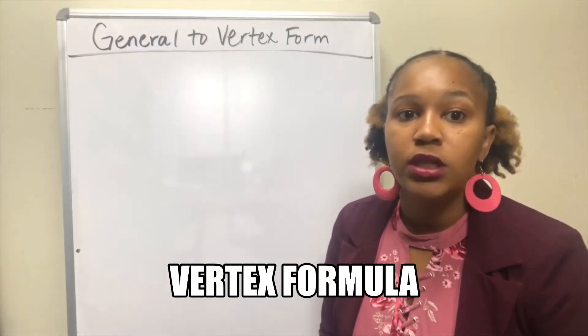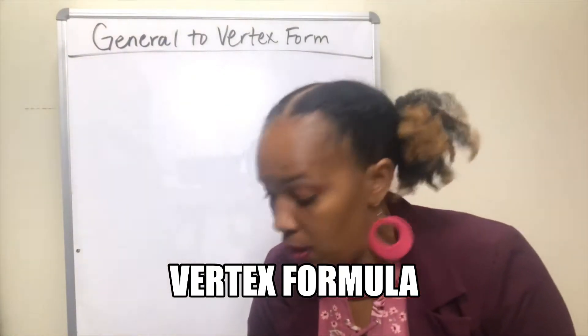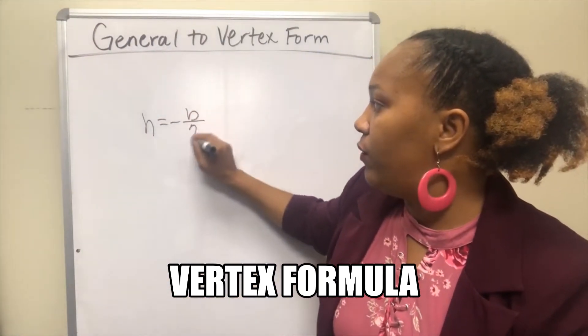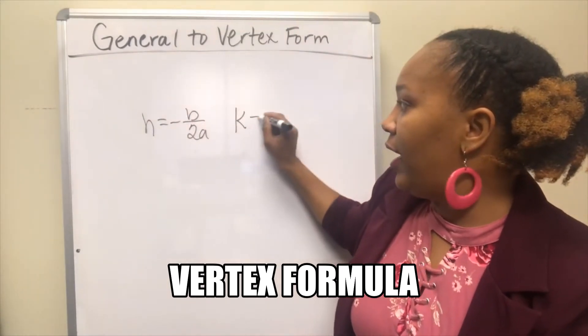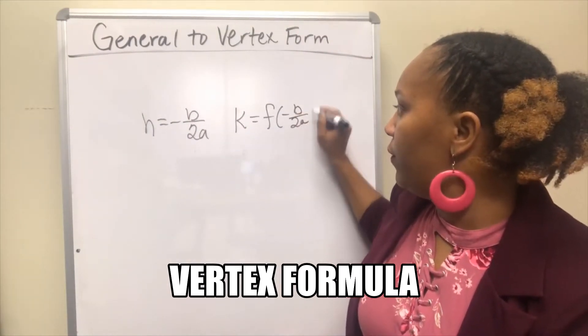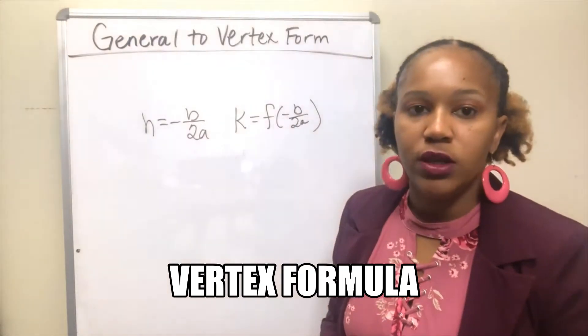So the first thing we need to know is what is the vertex formula. The vertex formula is h equal to negative b over 2a, and k is equal to f of h, meaning you plug whatever you get for h into the original function.